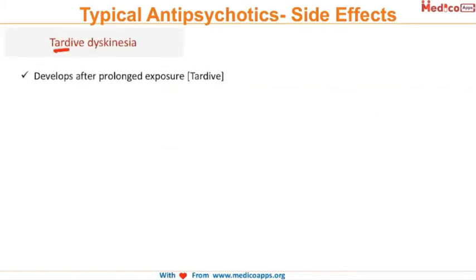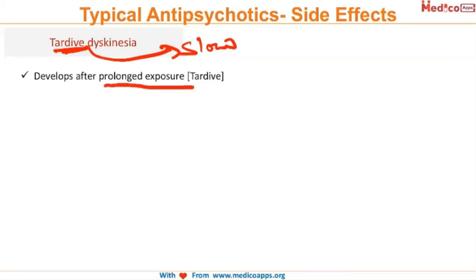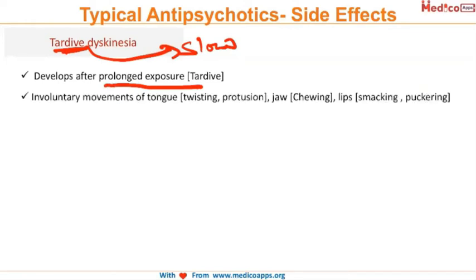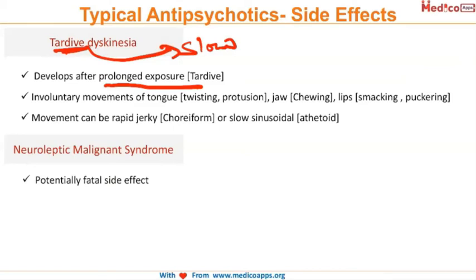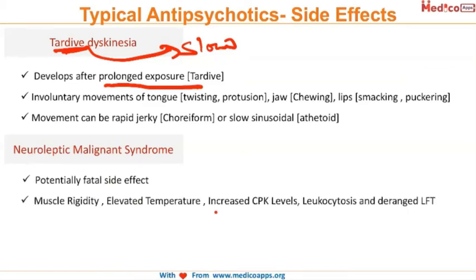Tardive dyskinesia — the word 'tardive' itself means slow — is an extrapyramidal side effect that develops only after prolonged use of antipsychotics. It presents with involuntary movements of the tongue like twisting and protrusion, jaw chewing, lip smacking and puckering. Movements can be either jerky or slow sinusoidal — that is athetoid or choreiform movements.